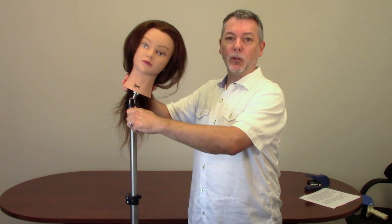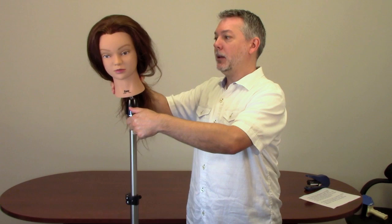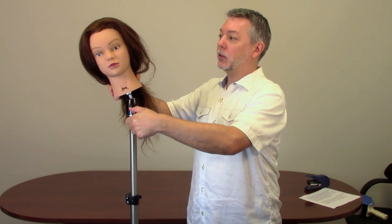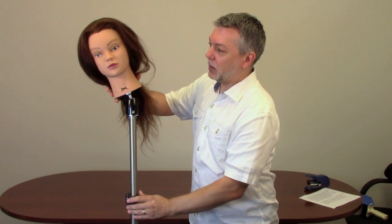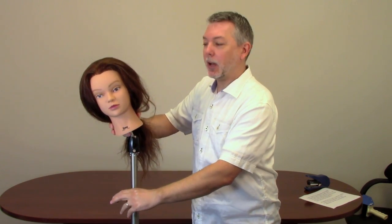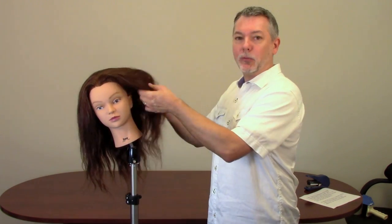Without removing the mannequin you can adjust this stand to reposition the head like so. We're just going to unscrew this knob adjustment and you can tilt the head forward or back in any position you want. So if you want to work on this side of the head for example, you can just tilt it, readjust the height, and then you're free to work on this side of the mannequin.